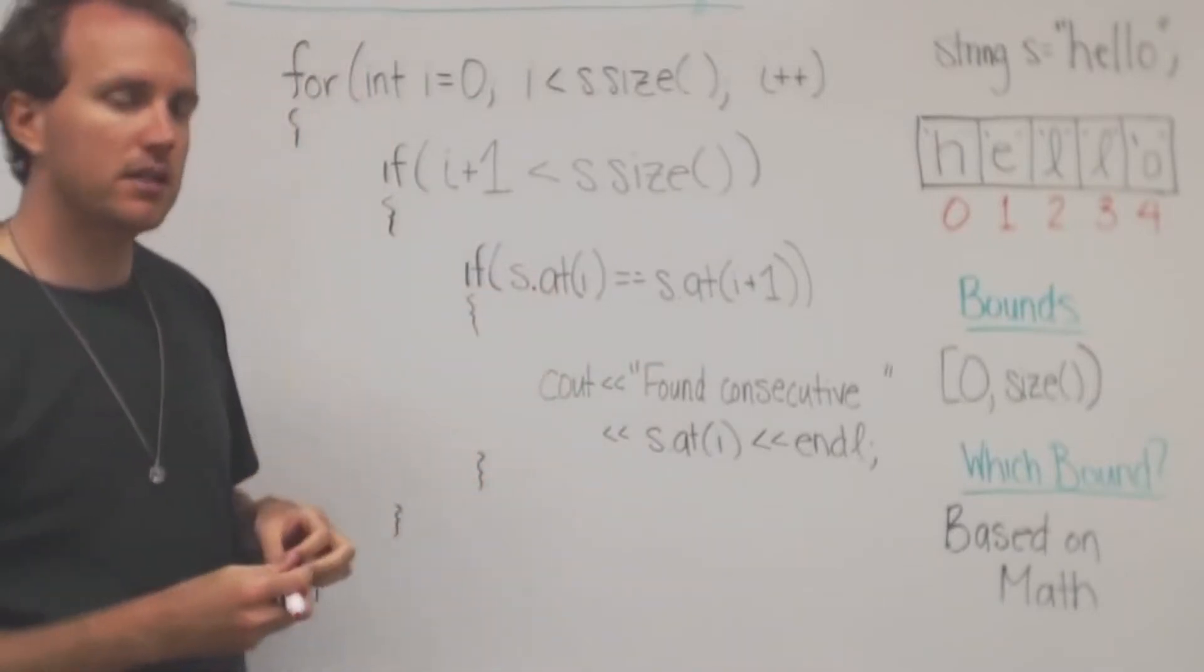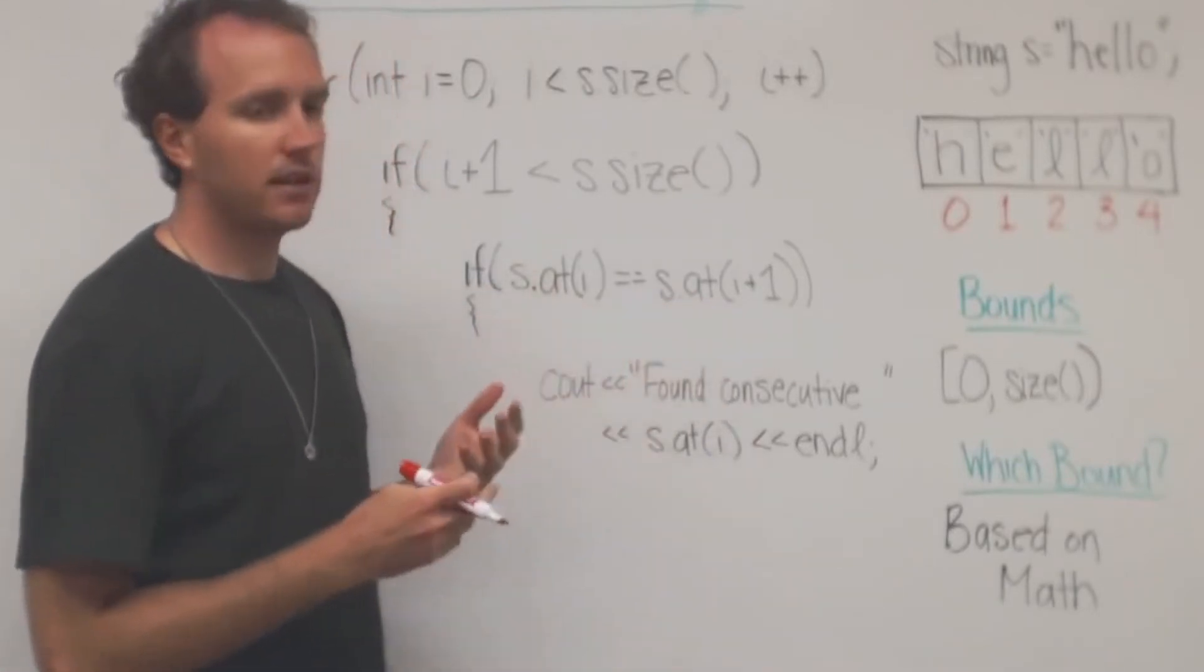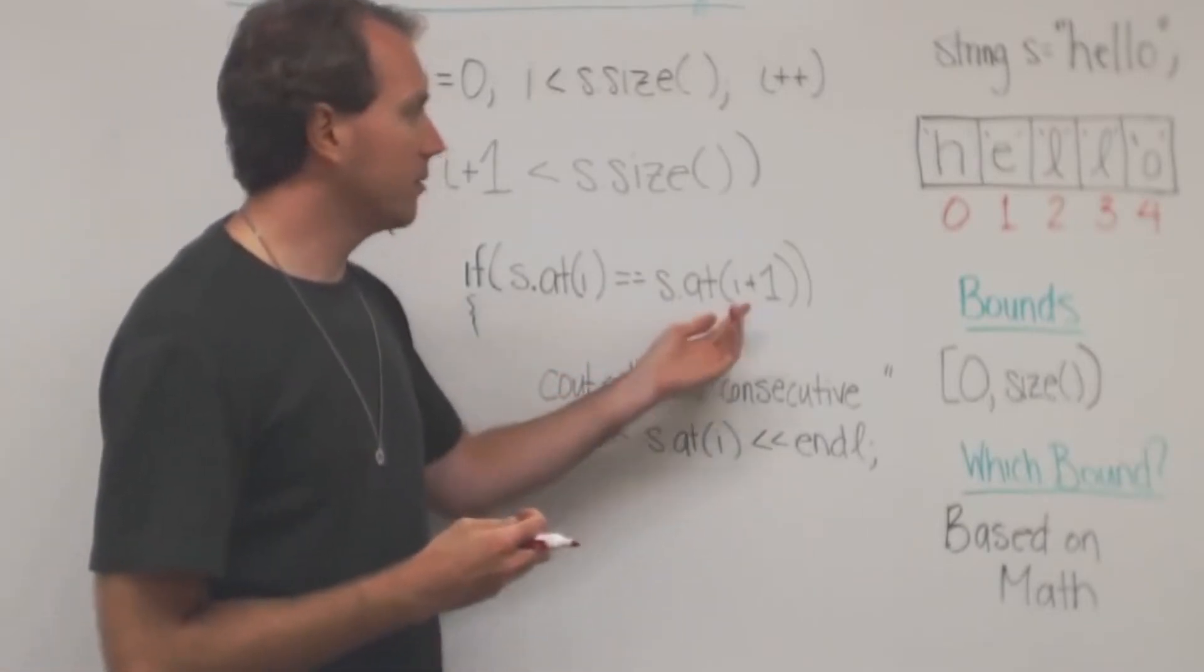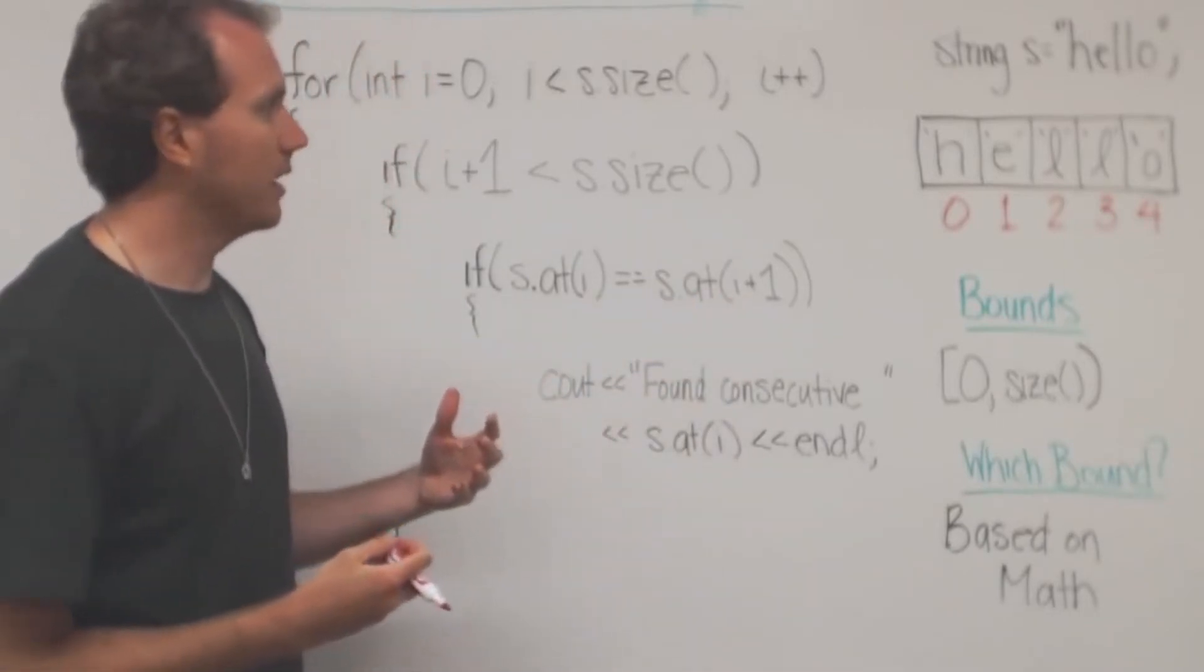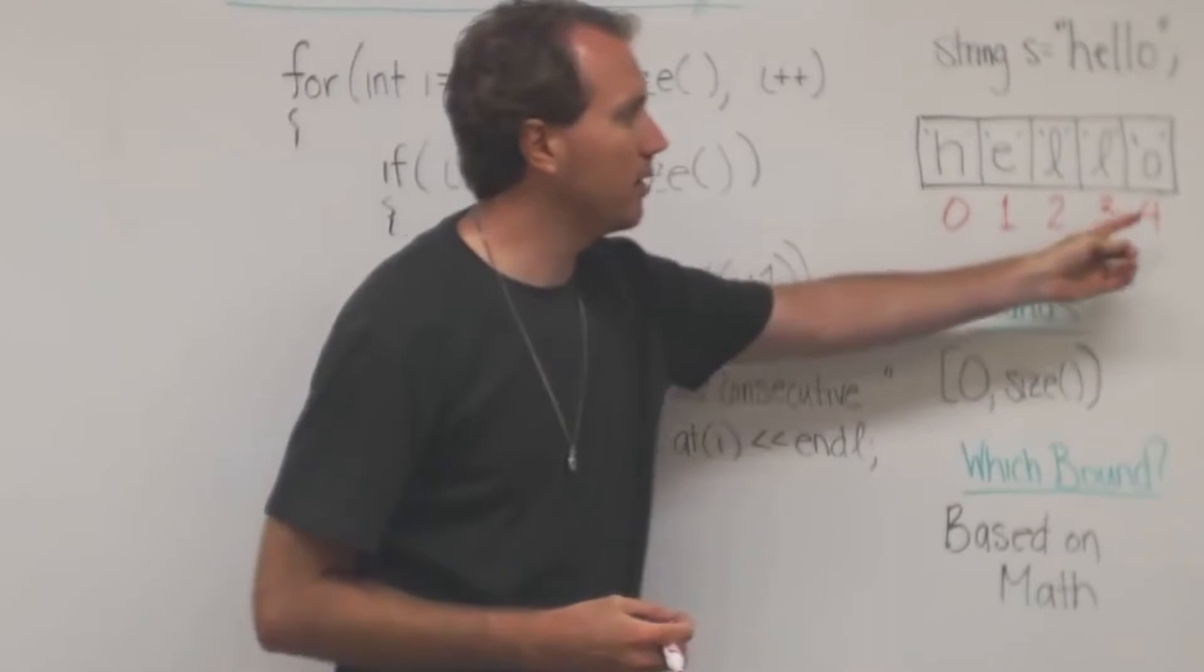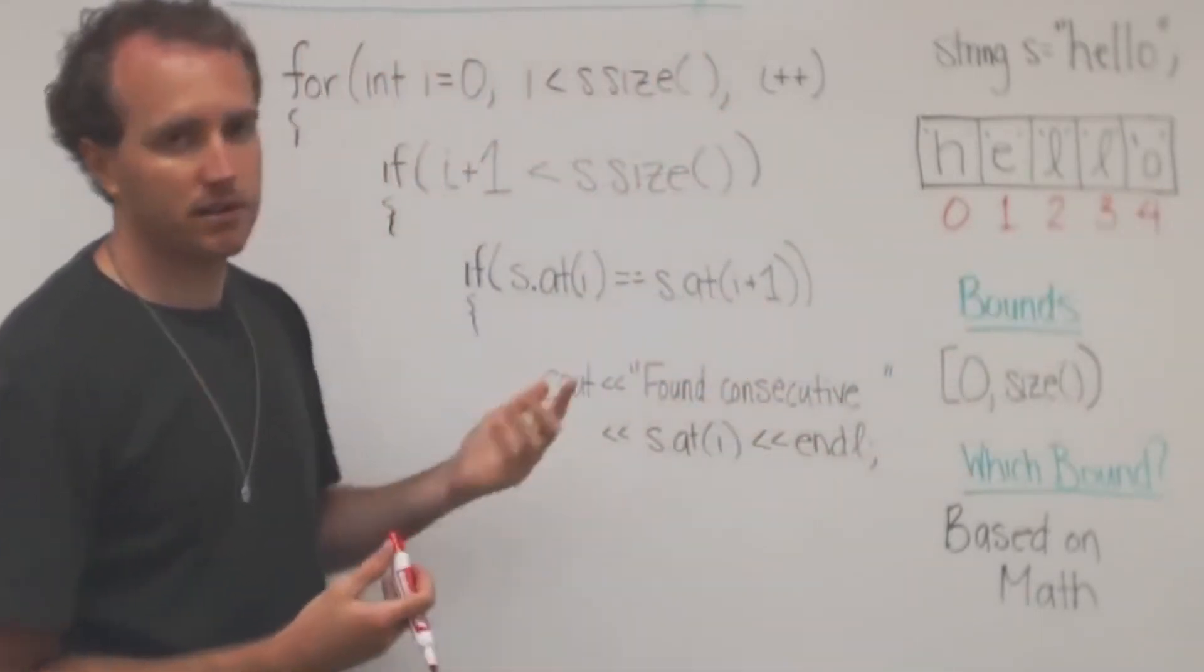What our concern is that when this one is going to send it out of bounds, we don't want to execute it. So when this is four, we don't want to go and say plus one.